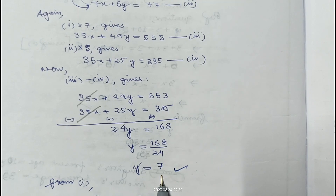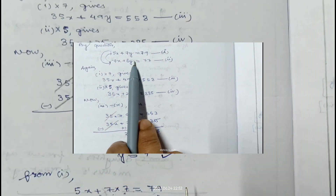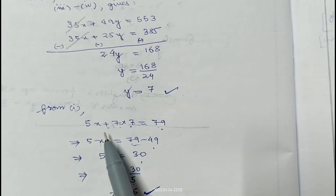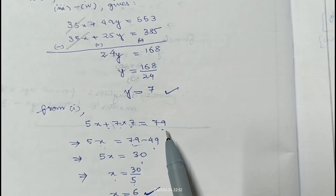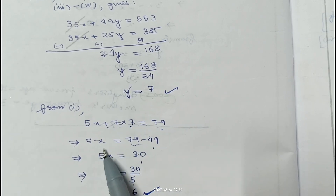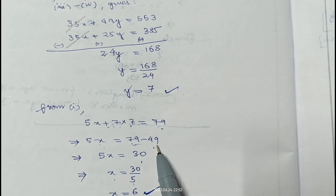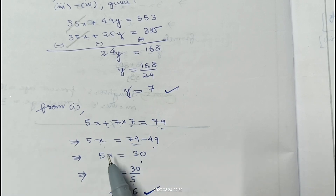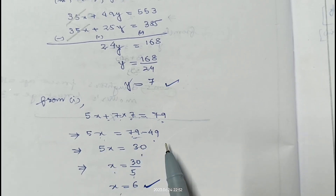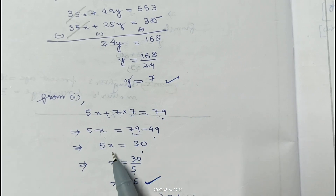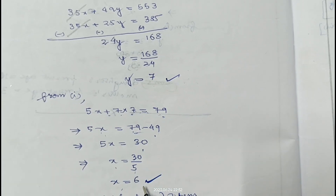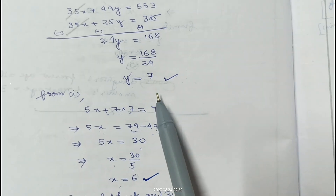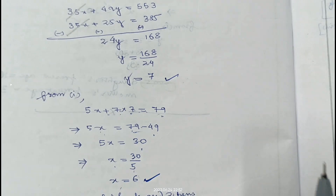Now placing y equals 7 in equation number 1: 5x plus 7 into 7 equals 79, so 5x plus 49 equals 79, giving 5x equals 79 minus 49, which is 30. Therefore x equals 30 by 5, which is 6. Therefore cost of 1 book is Rs. 6 and cost of 1 pen is Rs. 7.